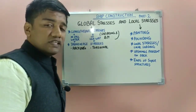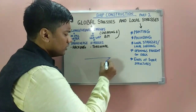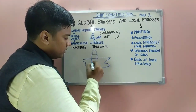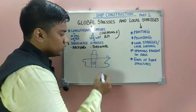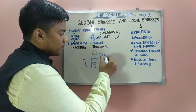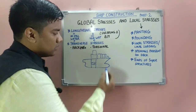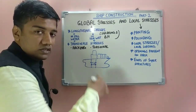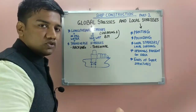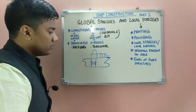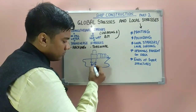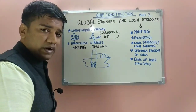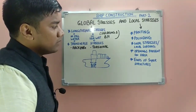Local stress or local loading is due to cargo loaded or machinery present on board — accommodation, engine room, winches, windlass, and cranes. Local stresses occur where the machinery is present. To compensate, these regions are provided with extra strengthening: extra frames, closer frame spacing, and more floors are provided in these regions.